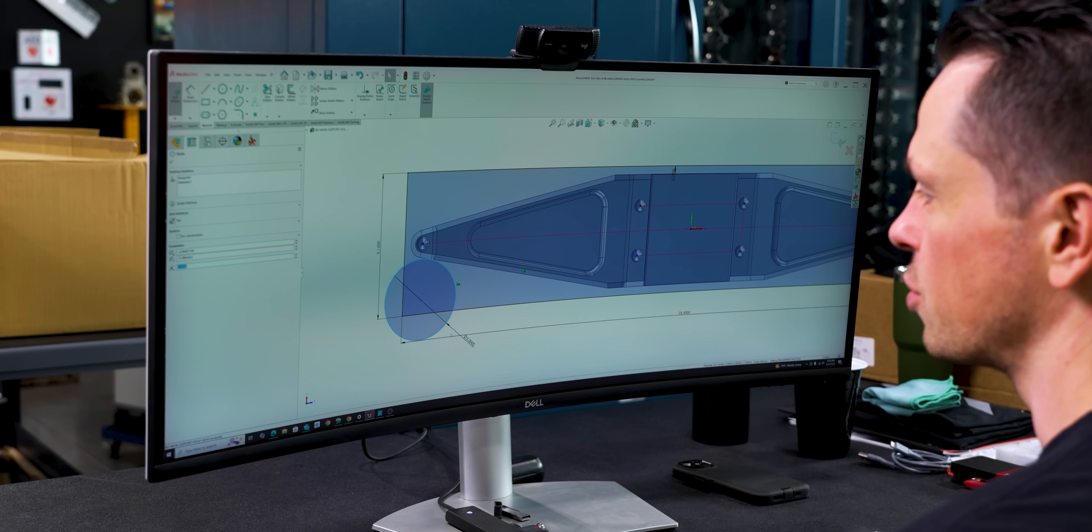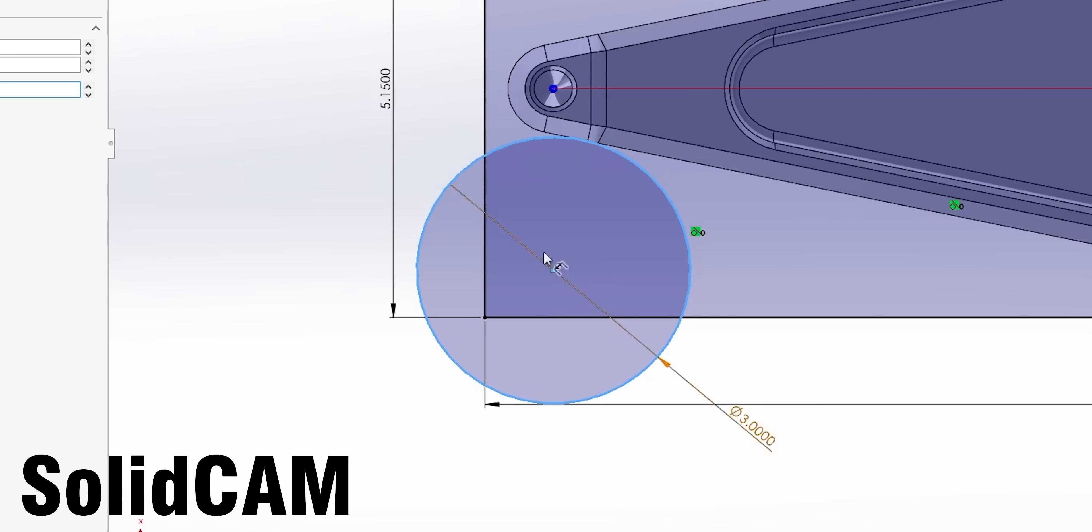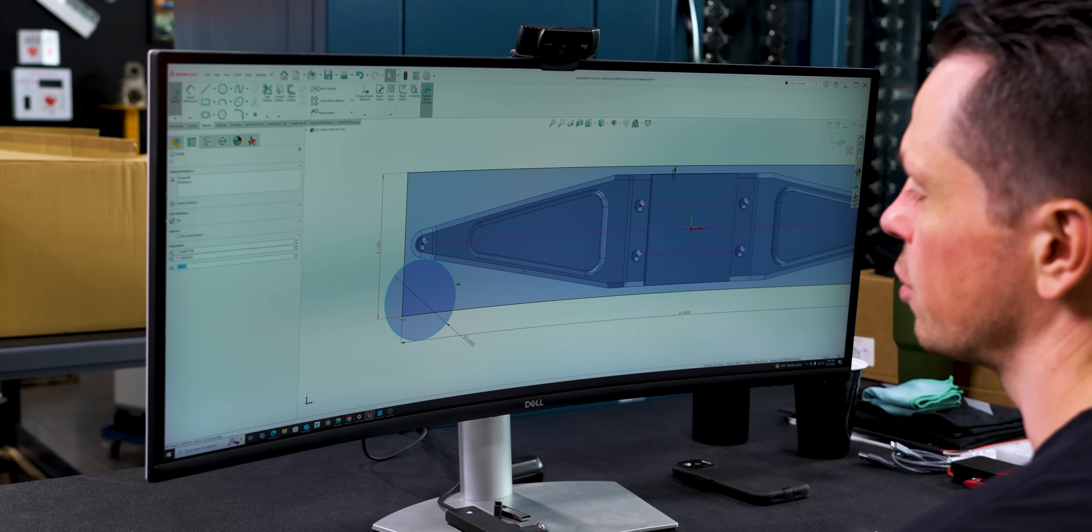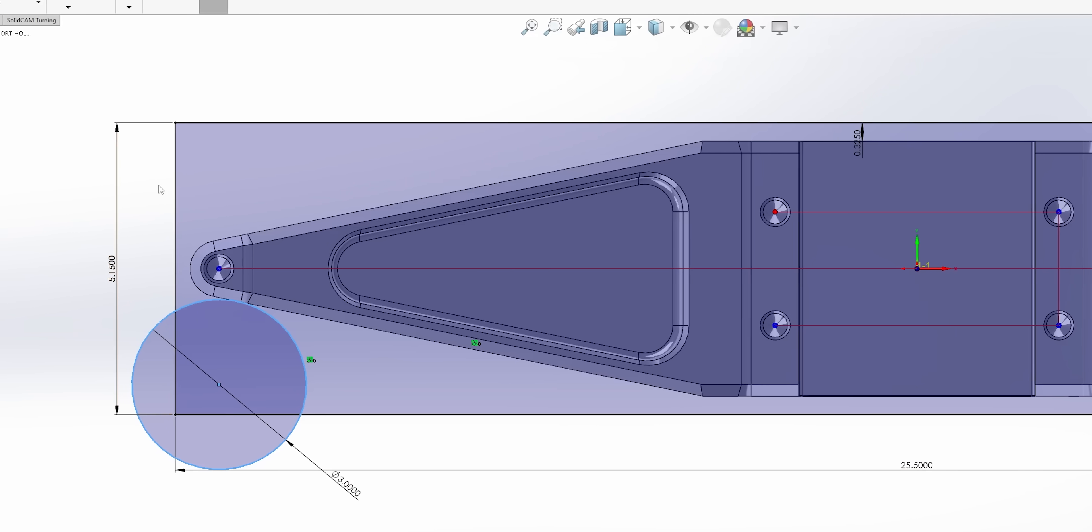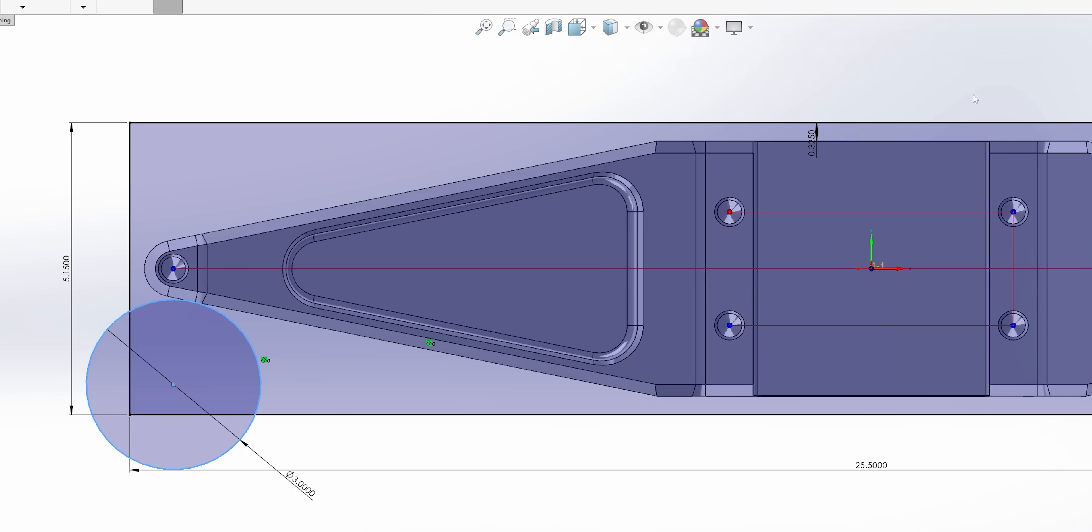So I sketched out our tool going around our part, and at this corner here is where our biggest radial engagement will be. It's about two and a quarter inches. For the majority of this cut, it's going to be less as it goes around the part. So we'll have lots of breaks for the spindle to be cooling down while we're taking these cuts.